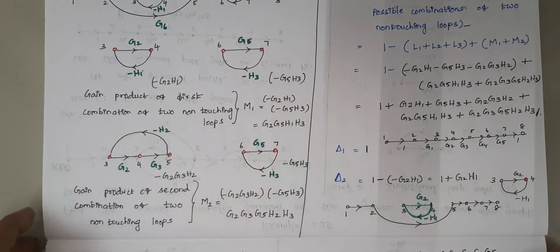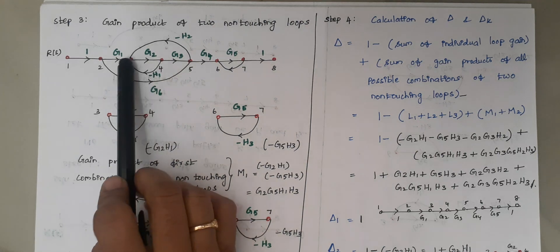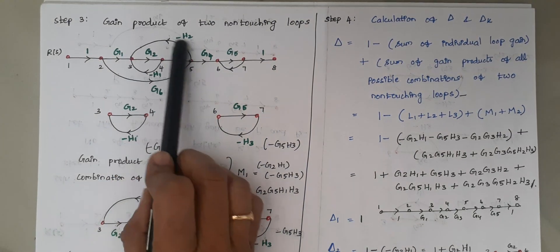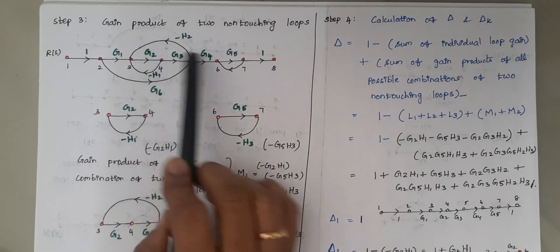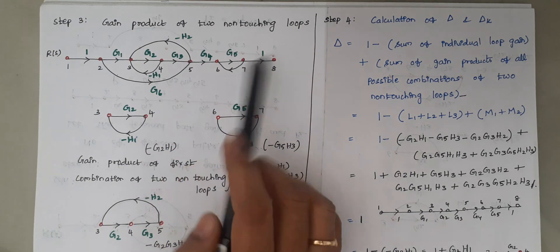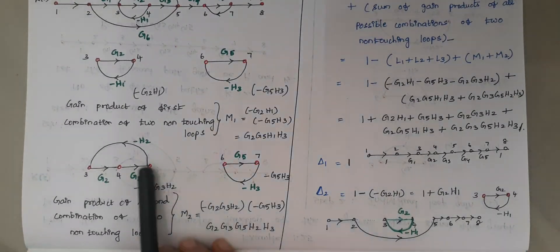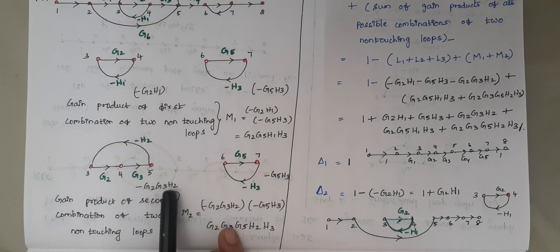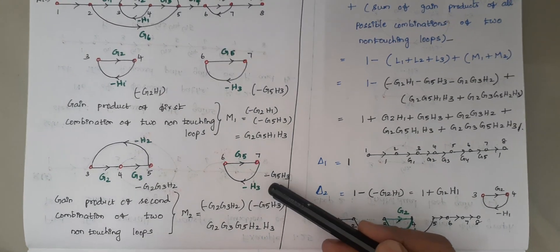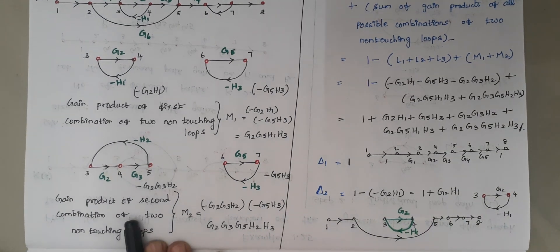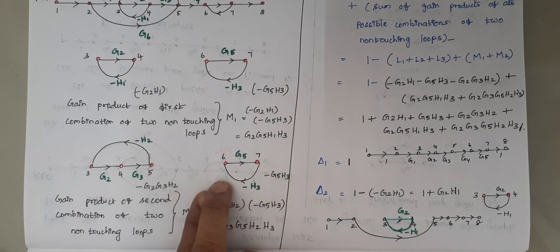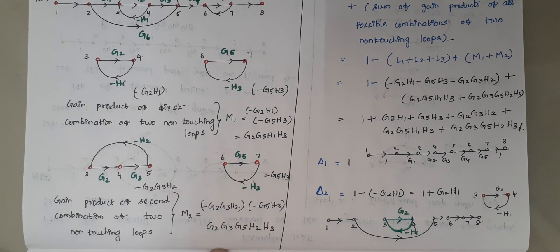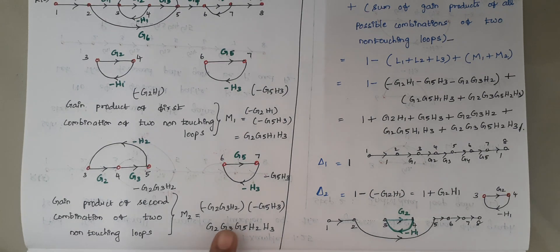The second combination of non-touching loops is the loop through nodes 3-4-5 and the loop through nodes 6-7. These two loops share no common nodes. Multiplying their gains: (−g2·g3·h2) × (−g5·h3) = +g2·g3·g5·h2·h3. This completes Step 3.